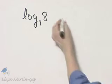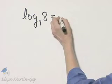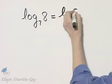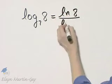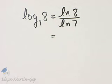We'll write this using a different base, using our change of base formula. You can choose whether you want to use natural logs or common logs - it makes no difference. I'll rewrite this as natural log of 8 over natural log of 7, and then you'll find each and divide.